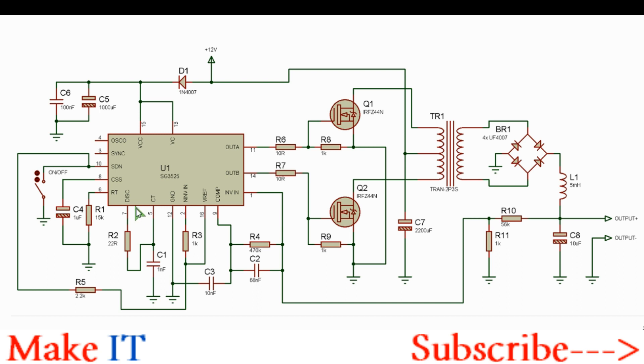The frequency is determined by the capacitance of CT, in this case it's 1 nF, as well as RT, which is 16 kOhms. This will set a frequency of 32 kHz.